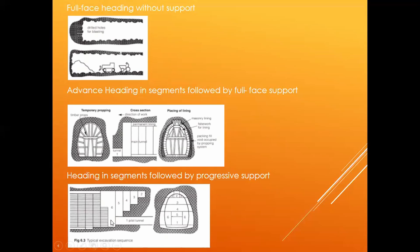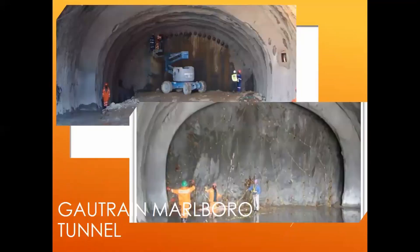With heading in segments followed by progressive support, you dig out different sections progressively — this picture explains it a lot better. You support it progressively as you dig out each piece, then continue. That's a picture showing how the Gautrain tunnel was constructed using this approach.